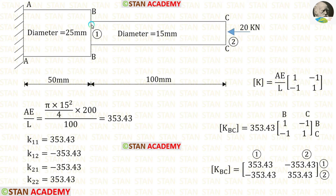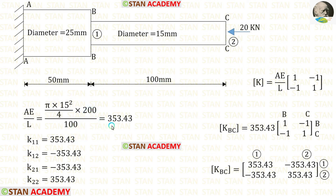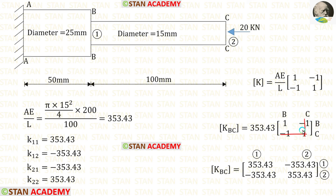Now let us make the element stiffness matrix for bar BB–CC. We calculate AE upon L: the diameter is 15 mm, so the area is pi times 15 squared over 4. E is 200 and L is 100. After calculation we get AE/L equal to 353.43. Applying that and multiplying with the standard bar stiffness matrix gives us the element stiffness matrix for BC. The first row and first column represent BB, which has the first coordinate, so we denote them as 1. The second row and second column represent CC, which has the second coordinate, so we denote them as 2, 2.